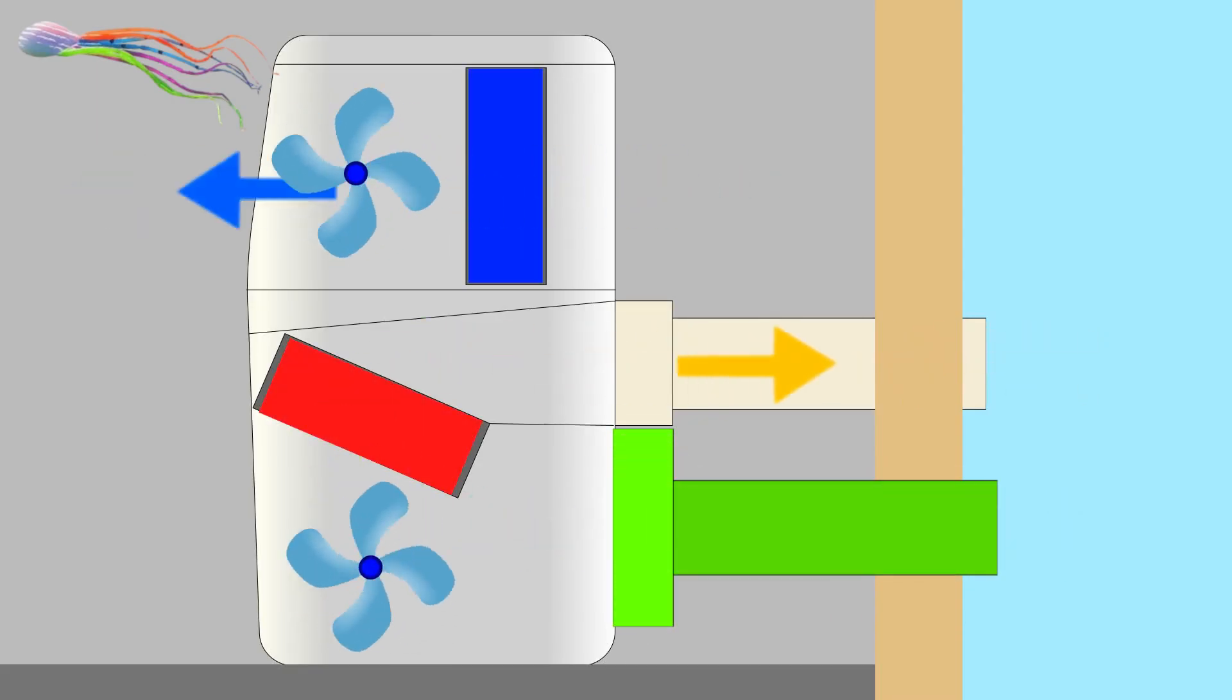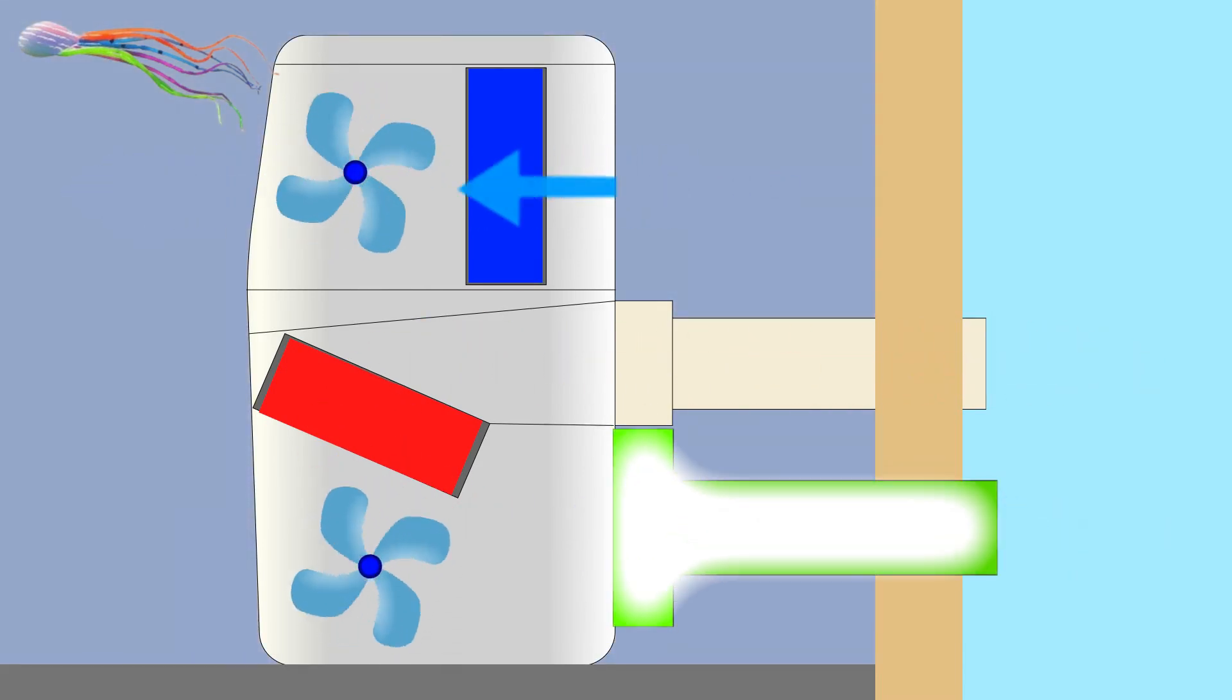Again, in simplified terms, the FITZIO is an upgrade kit for portable air conditioners that prevents hot air from outside from getting into the room.